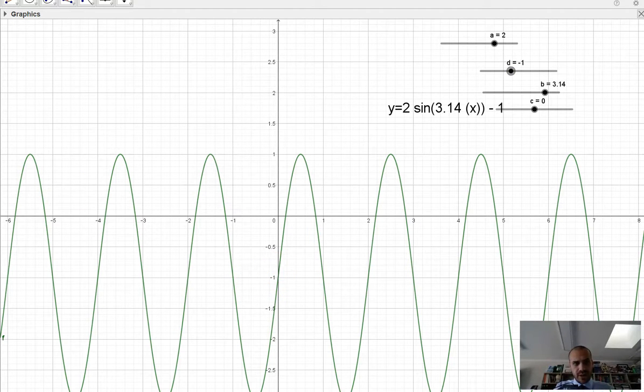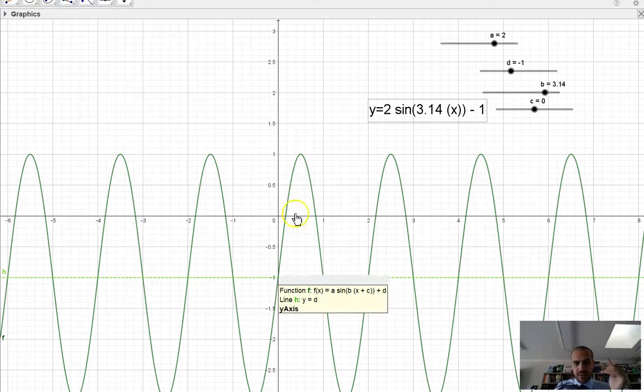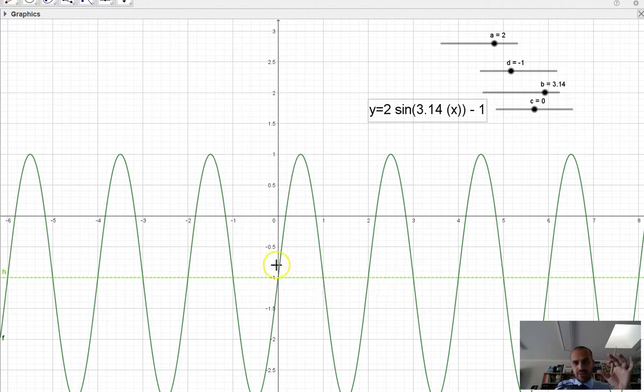The middle value is negative 1, because the d value is negative 1. The amplitude is 2, so the distance from there to there is 2, and the distance from there to the bottom is 2, and the period is 2 pi on pi, which is 2. It takes two units for it to repeat. All right, so there's a little bit to go through there. Let's do a full work example.